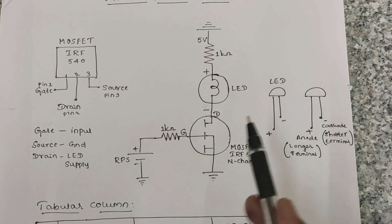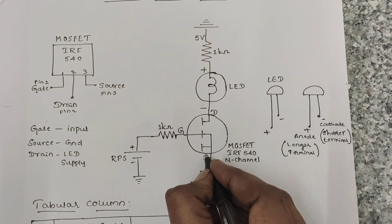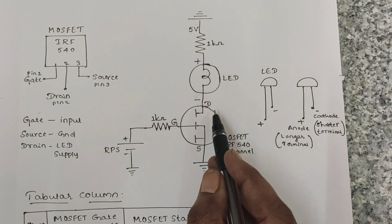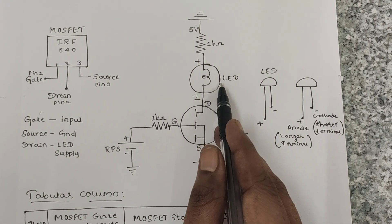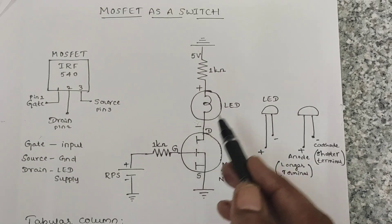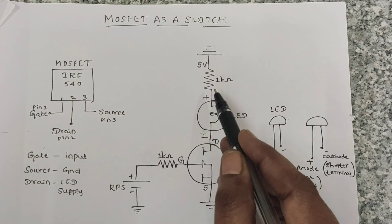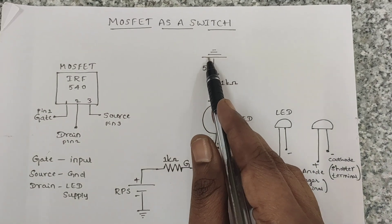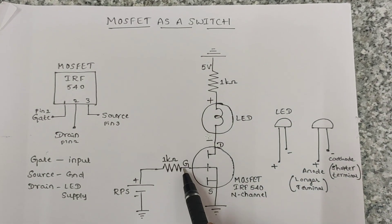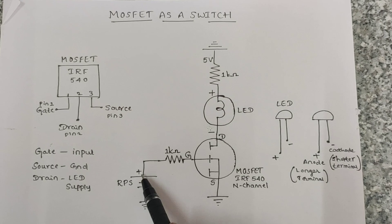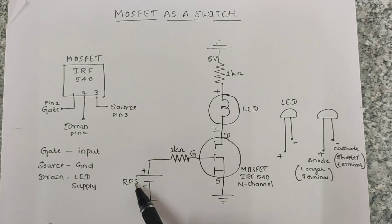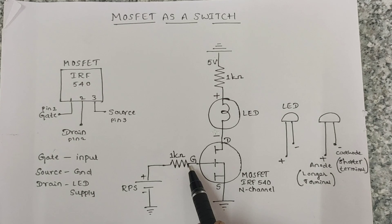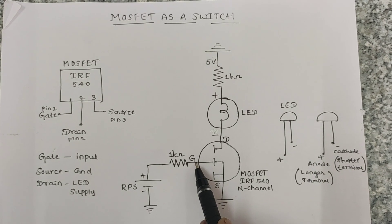The Source is connected directly to the ground. For the Drain connection, we are going to connect the negative terminal of the LED to the Drain, and the positive terminal of the LED is connected to one end of the resistor. The other end of the resistor is connected to the ground.